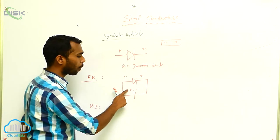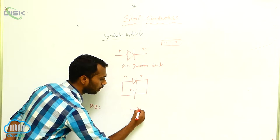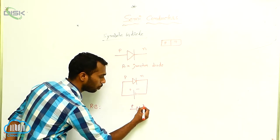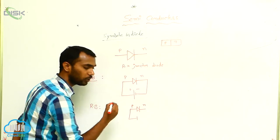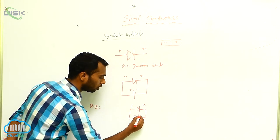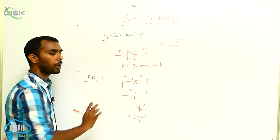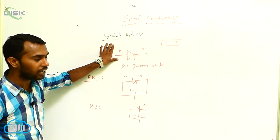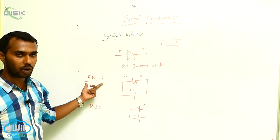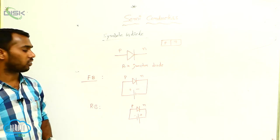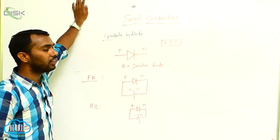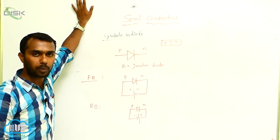What is the reverse bias symbol? For reverse bias, P must be connected to the negative terminal — the opposite. This is the P-N junction diode — P connected to the battery negative terminal and N connected to the battery positive terminal. This is the reverse bias symbol. Using the P-N junction diode, we can draw the symbol for forward bias and reverse bias. This concept is complete.